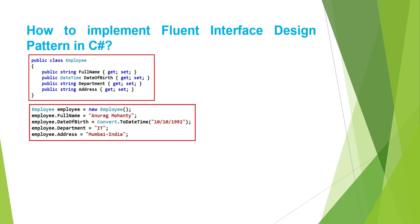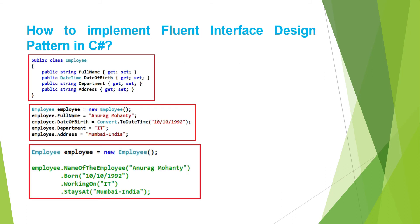The fluent interface design pattern simplifies our object consumption code by making our code more simple, readable, and understandable. Is it not nice to set the object properties in a way that is like speaking a sentence? That would really make the class consumption code more simple and more readable. The next question is: how do we achieve this?